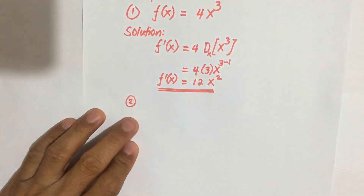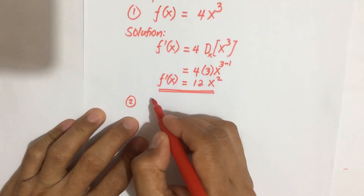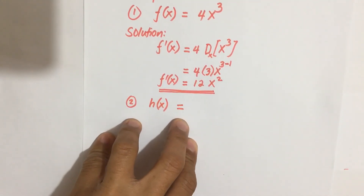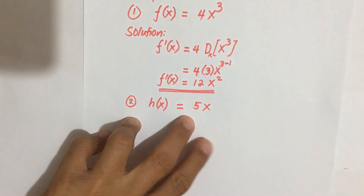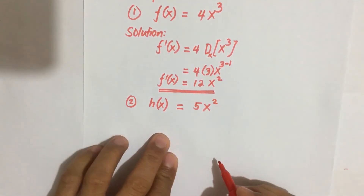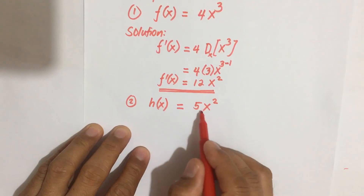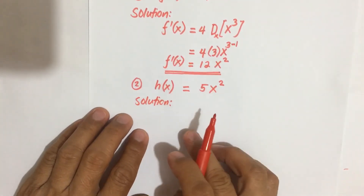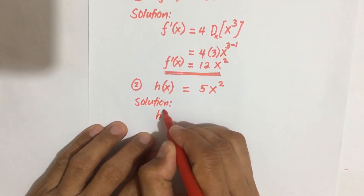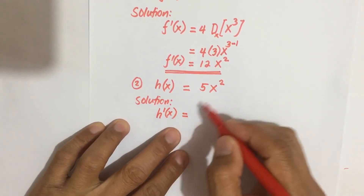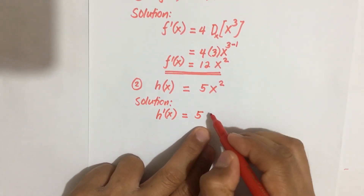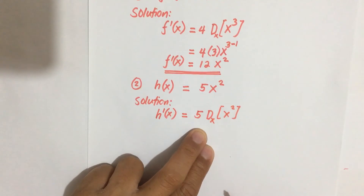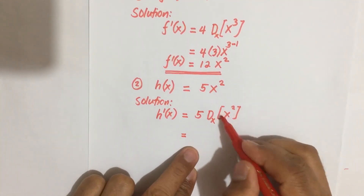Example number two: if you are given H(x) equal to 5x squared, you are asked to find the derivative of this function. The solution is similar to what we have done above. The derivative H'(x) is equal to — you separate the constant 5, then take the derivative of x squared with respect to x.